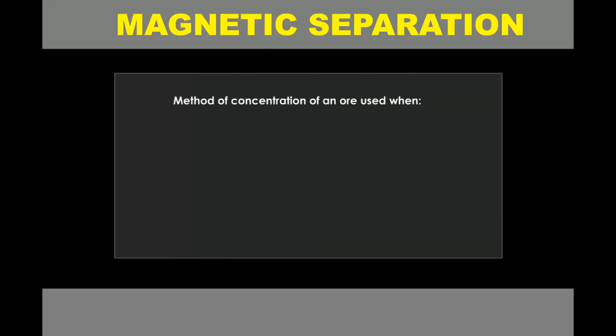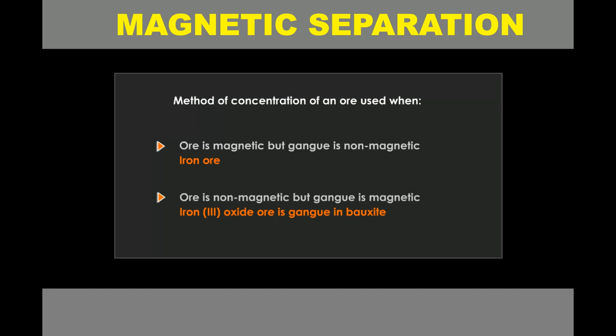Magnetic separation is the method of concentration of an ore. It is used when the ore is magnetic but the gangue is non-magnetic, or when the ore is non-magnetic but the gangue is magnetic.